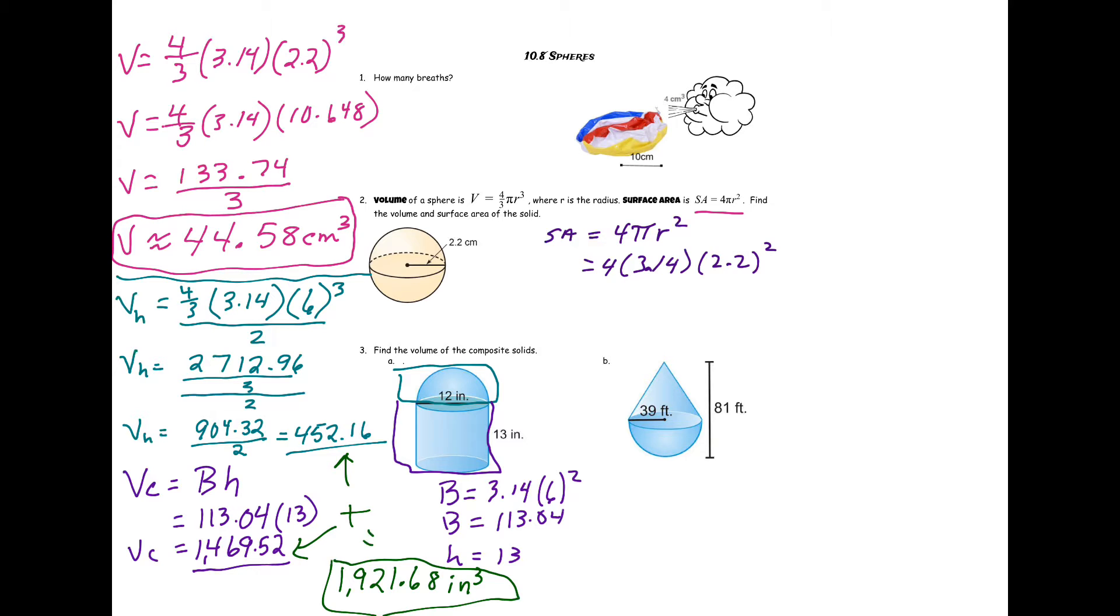And just remember, order of operations, exponents does happen first, so make sure you square the 2.2 to get 4.84. And then you can just multiply the other three numbers. So our surface area will be 60.79.